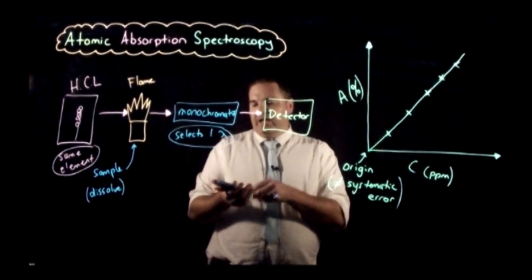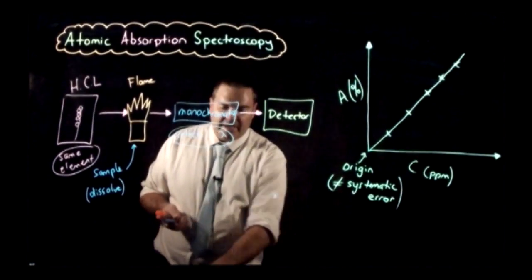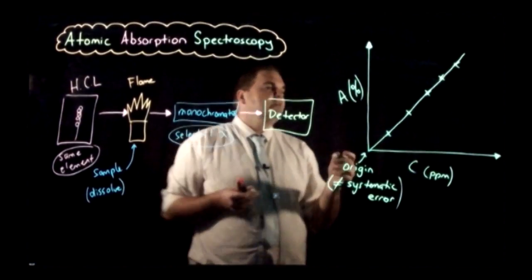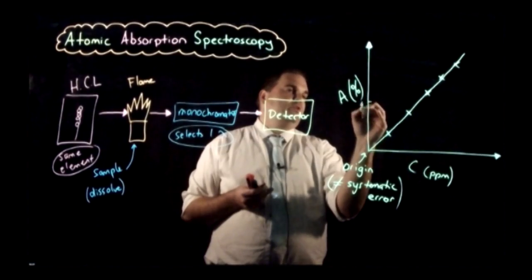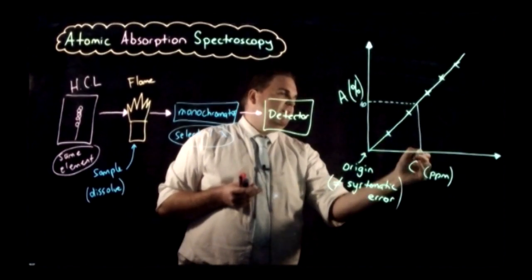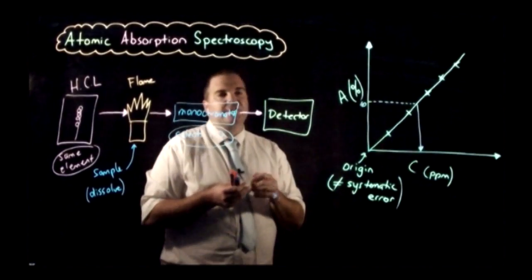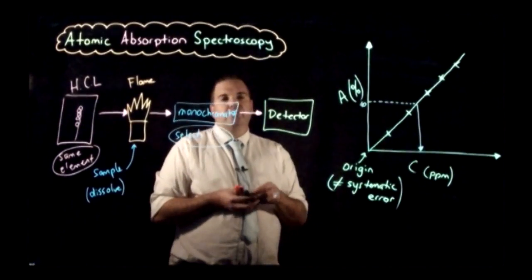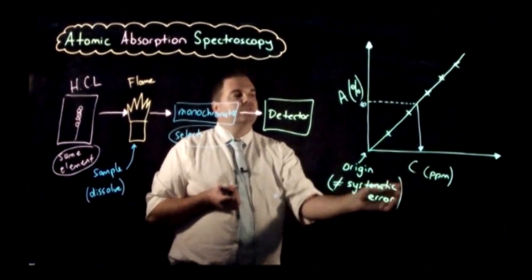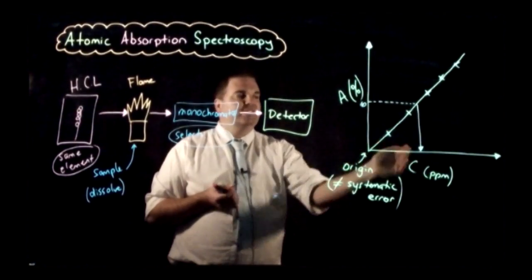We then put our sample through, vaporize it, determine how much light is absorbed, and plot that onto our graph. For example, if we have an absorbance reading of about 40%, we find 40% on the absorbance axis, bring that across to our line of best fit, then bring it straight down to determine our concentration. That's how you use your calibration curve.